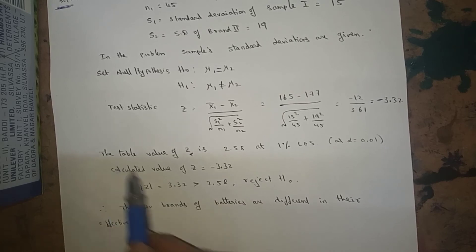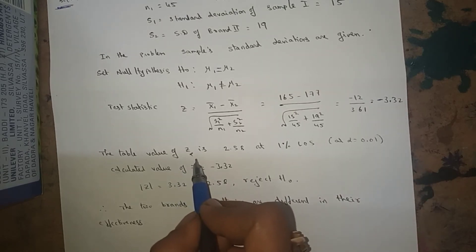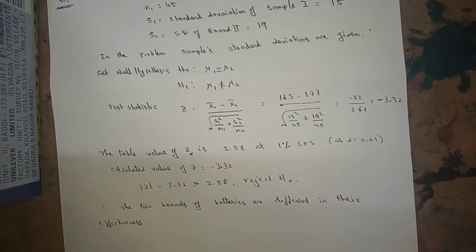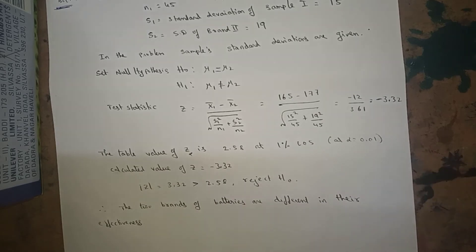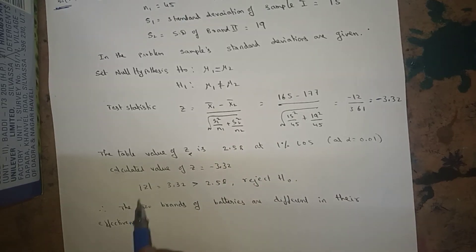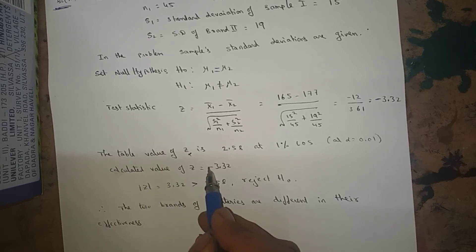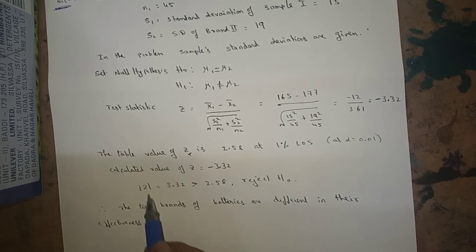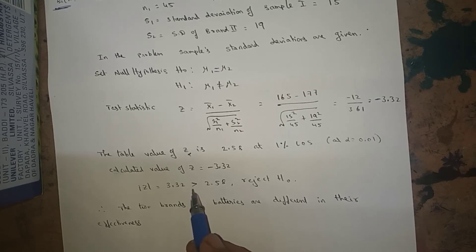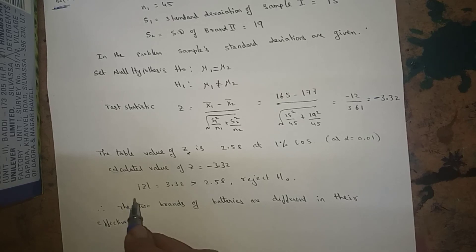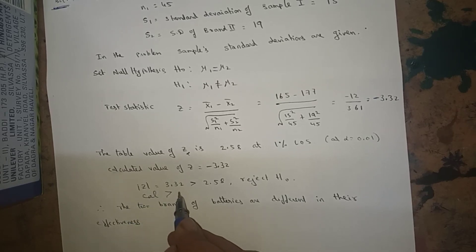Simplifying gives Z equals minus 3.32. This is the calculated value. The tabular value at one percent level of significance for a two-tailed test is Z alpha equals 2.58. The modulus of the calculated value, |minus 3.32| = 3.32, is greater than 2.58. Therefore, the calculated value is greater than the table value.